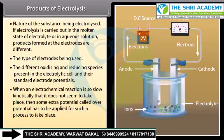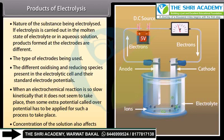When an electrochemical reaction is so slow kinetically that it does not seem to take place, some extra potential called overpotential has to be applied for such a process to take place. The concentration of the solution also affects the products of electrolysis.